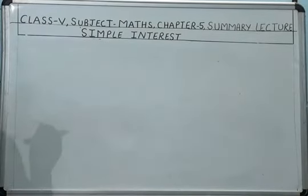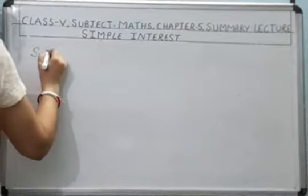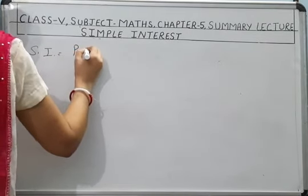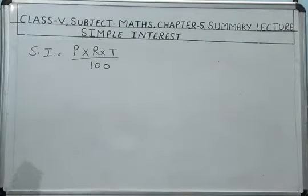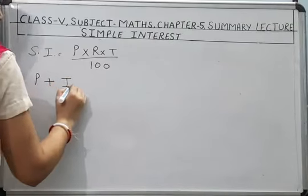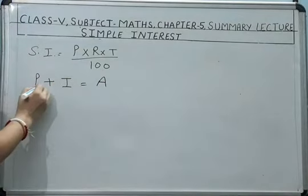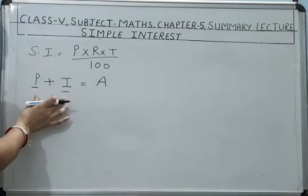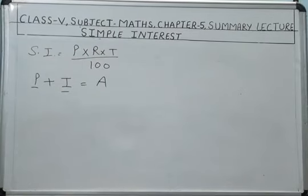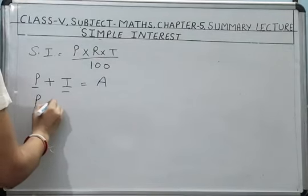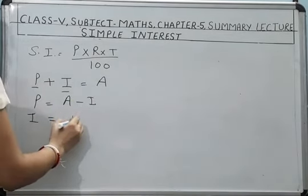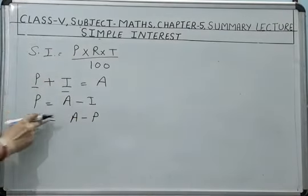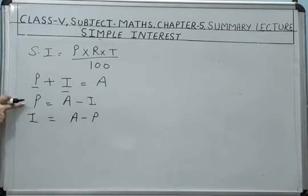Now let's move to the formula. P = Principal, T = Time, R = Rate of Interest. Simple Interest can be calculated by multiplying Principal × Rate × Time divided by 100, that is SI = P × R × T / 100. And Principal + Interest = Amount. Also, Principal = Amount − Interest, and Interest = Amount − Principal.